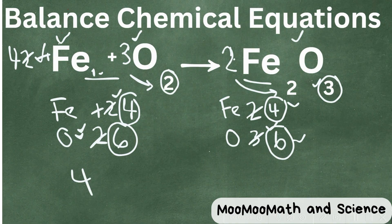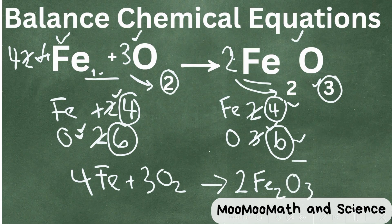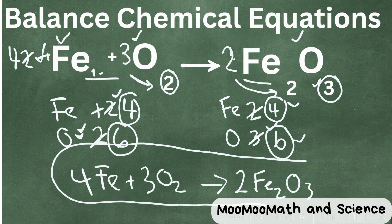We have 4 irons plus 3 O2, and that's going to yield 2 Fe2O3. So there we go. We have a balanced equation.